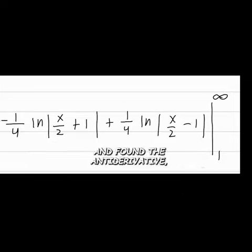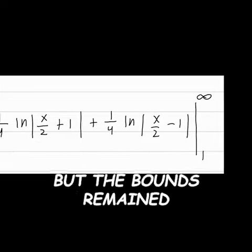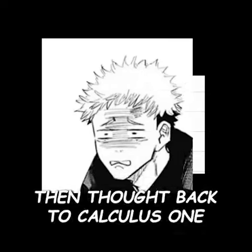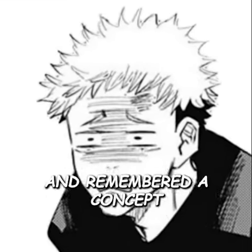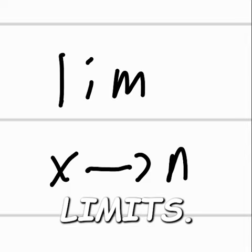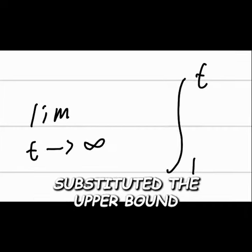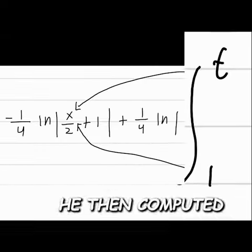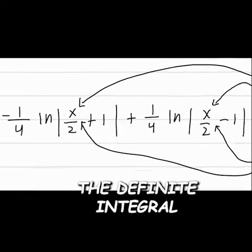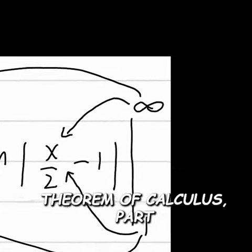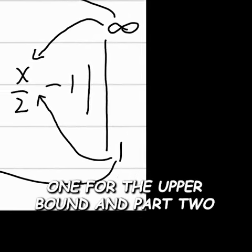He began integrating and found the antiderivative, but the bounds remained a problem. The student then thought back to calculus 1 and remembered a concept he despised: limits. As the student substituted the upper bound for t as t approaches infinity, he computed the definite integral using limits, applying the fundamental theorem of calculus part 1 for the upper bound and part 2 for the lower bound.